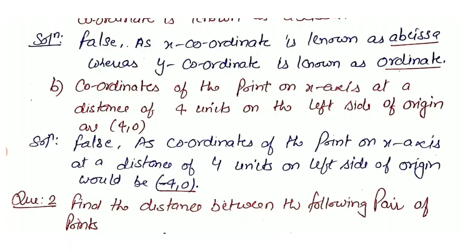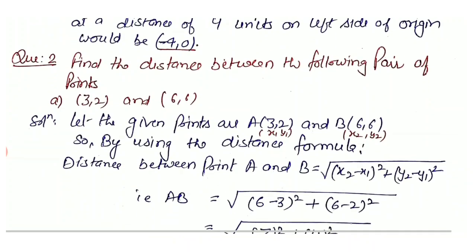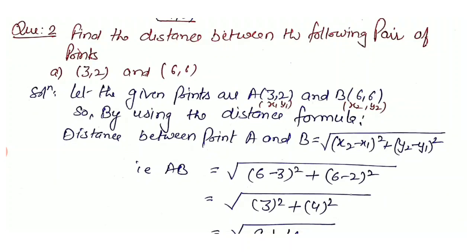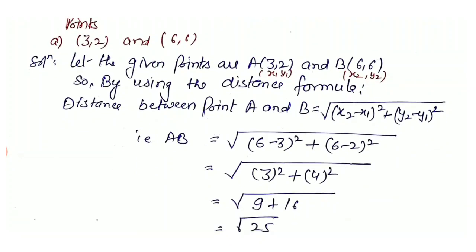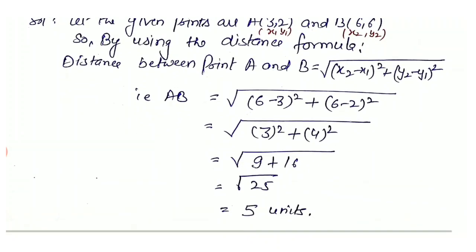Question 2 — Find the distance between the following pairs of points. Part a: A(3, 2) and B(6, 6). By the distance formula: AB = √[(6−3)² + (6−2)²] = √[3² + 4²] = √[9 + 16] = √25 = 5 units. Part b: P(0, 0) and Q(6, 1). By the distance formula: PQ = √[(6−0)² + (1−0)²] = √[36 + 1] = √37 units.